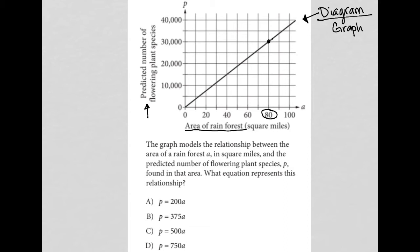The question says: the graph models the relationship between the area of a rainforest a in square miles and the predicted number of flowering plant species p found in that area. What equation represents this relationship?